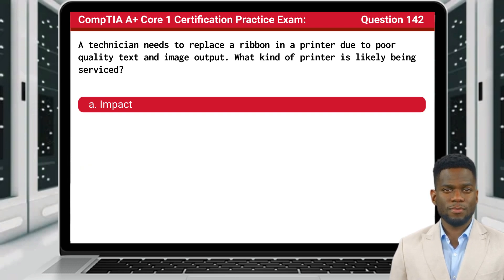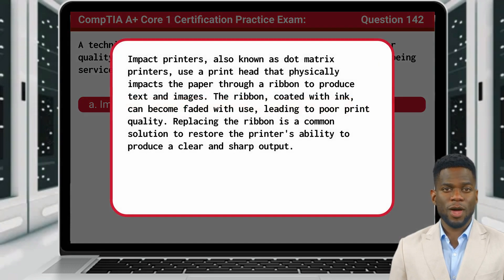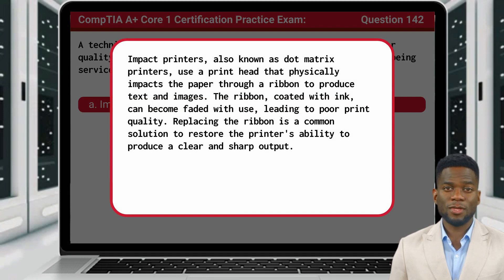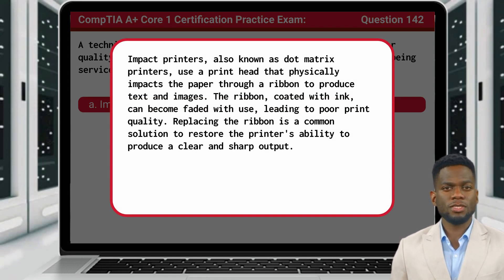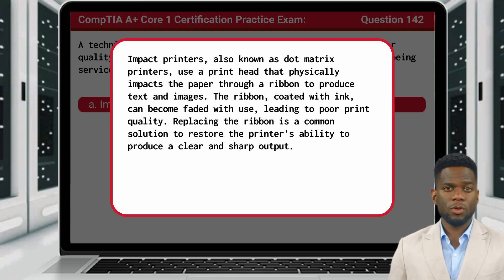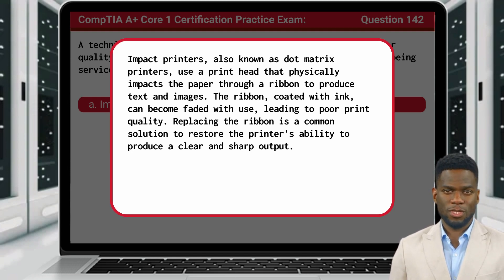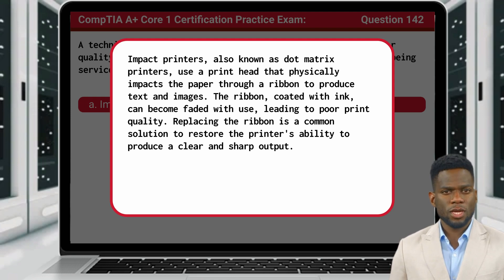The answer is A, Impact. Impact printers, also known as dot matrix printers, use a printhead that physically impacts the paper through a ribbon to produce text and images. The ribbon, coated with ink, can become faded with use, leading to poor print quality. Replacing the ribbon is a common solution to restore the printer's ability to produce a clear and sharp output.